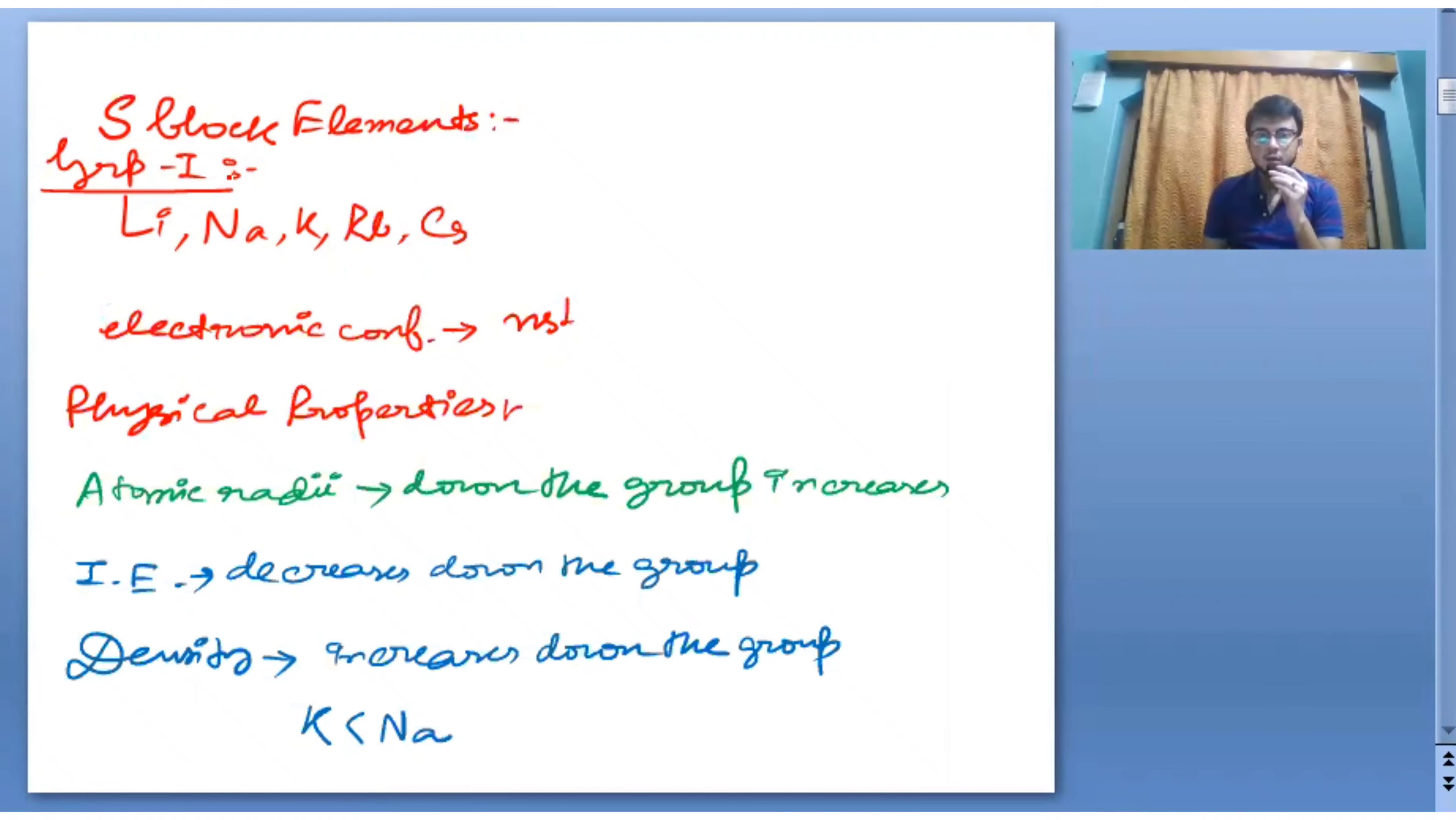So what is S block elements? That is Li, Na, K, Rb, Cs. These five are our group 1 elements, called alkali metals. Their electronic configuration of outermost orbital will be NS1.